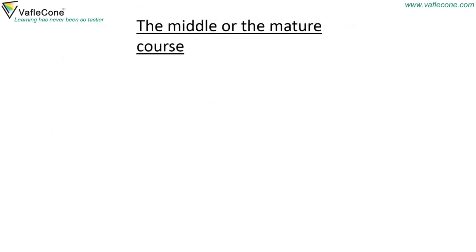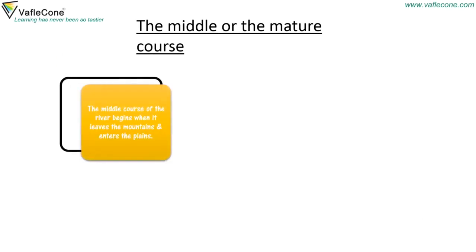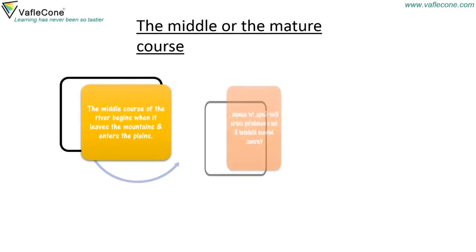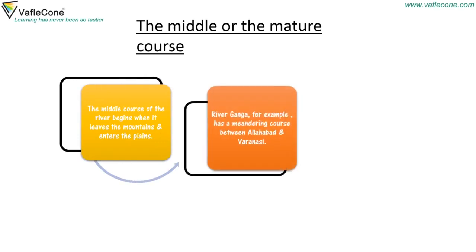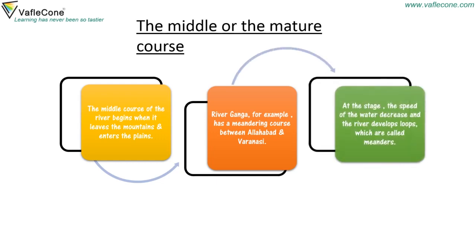The middle or mature course begins when the river leaves the mountains and enters the plains. River Ganga, for example, has a meandering course between Allahabad and Varanasi. At this stage, the speed of the water decreases and the river develops loops which are called meanders.